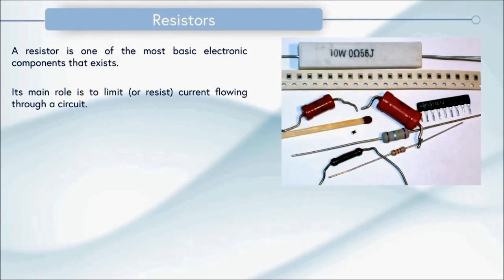A resistor is one of the most basic electronic components that exists. You can see some pictures of them on the screen now and you can see they come in many different shapes and sizes and there's a matchstick there to give you an idea of their scale. The main role of a resistor is to limit or to resist the current flowing through a circuit. So why is that actually useful? Well we don't want large currents to damage sensitive pieces of equipment, so if we put a resistor in connection with them we can make sure that we operate a circuit safely.